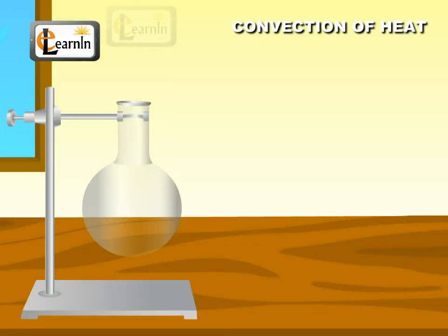Take a round-bottomed flask. Put some crystals of potassium permanganate in it. Pour water into the flask gently so as not to disturb the crystals much.